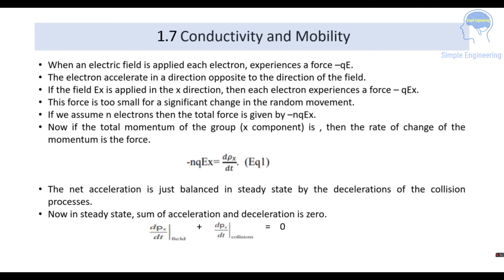When an electric field is applied, each electron experiences a force qE. The electron accelerates in a direction opposite to the direction of the electric field. If the electric field is applied in the x direction, the electron experiences a force in the opposite direction, that is minus qE_x. This force produces a small but significant change in the random motion. If there are n electrons, the total force equals minus nqE_x.